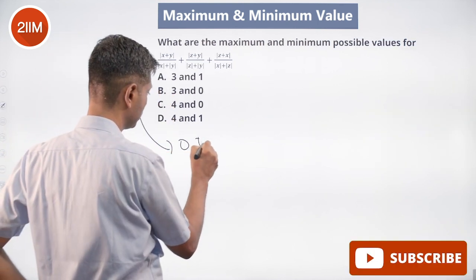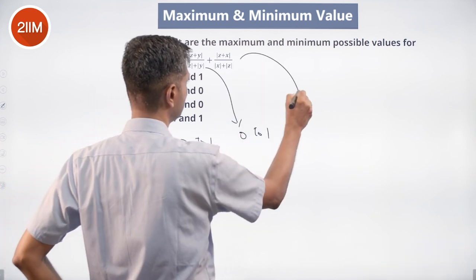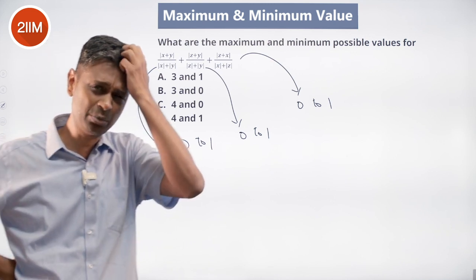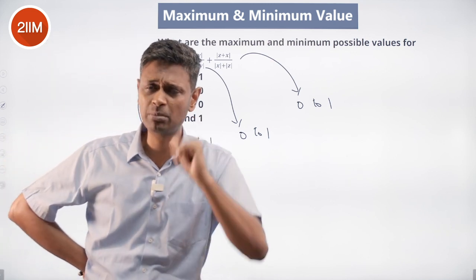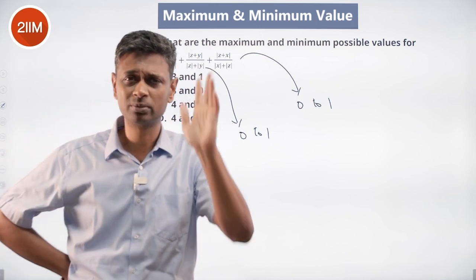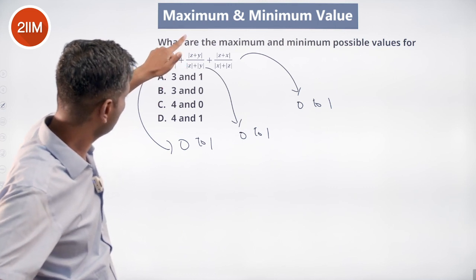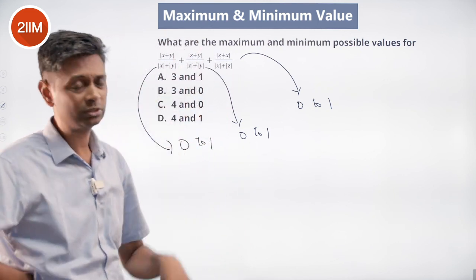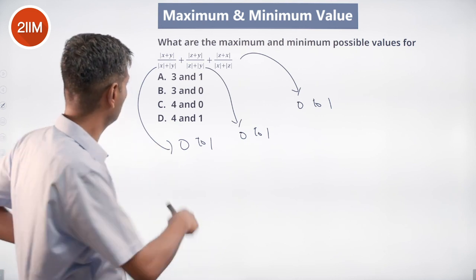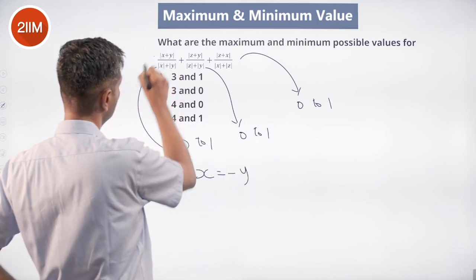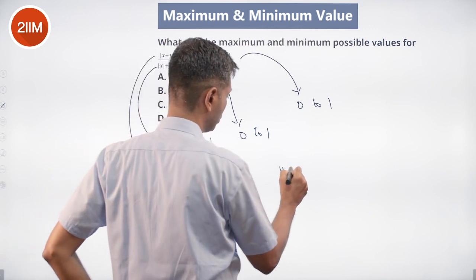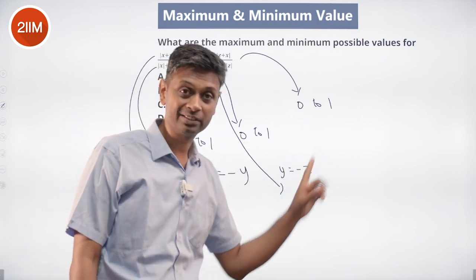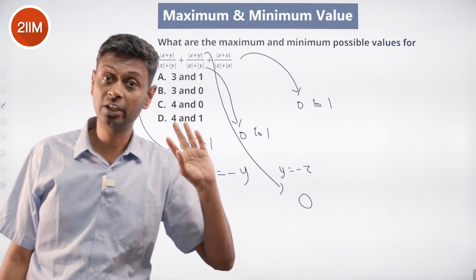Each of these three expressions goes from 0 to 1, so the overall total should go from 0 to 3 — maximum is 3, minimum is 0, apparently. Now, when will the maximum happen? If I put x=2, y=3, z=4, then each fraction equals 1 and the total is 3. Can I get 0? That would require all three terms to be 0. If I put x equal to minus y to make the first term 0, and y equal to minus z to make the second term 0, then y is both minus x and minus z, meaning x should equal z.